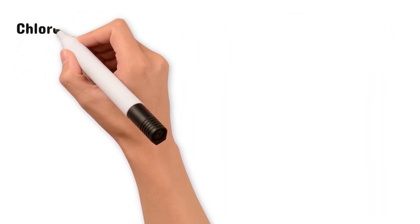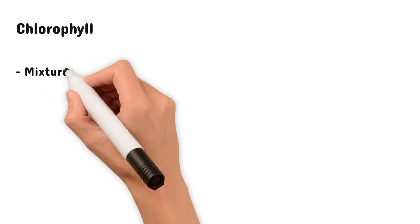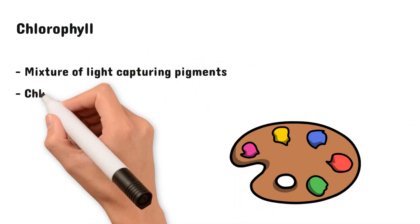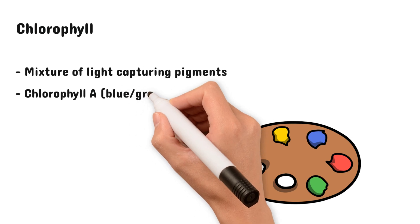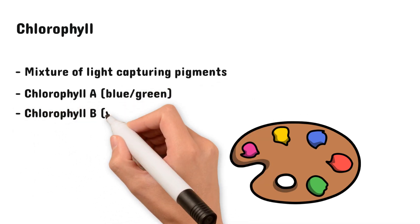Let's talk about chlorophyll. We all know that chlorophyll is a light-capturing photosynthetic pigment, but actually you'd be surprised to hear that chlorophyll is not a single pigment. Instead, it is a mixture of pigments. These include chlorophyll a, which is blue-green, and chlorophyll b, which is yellow-green.